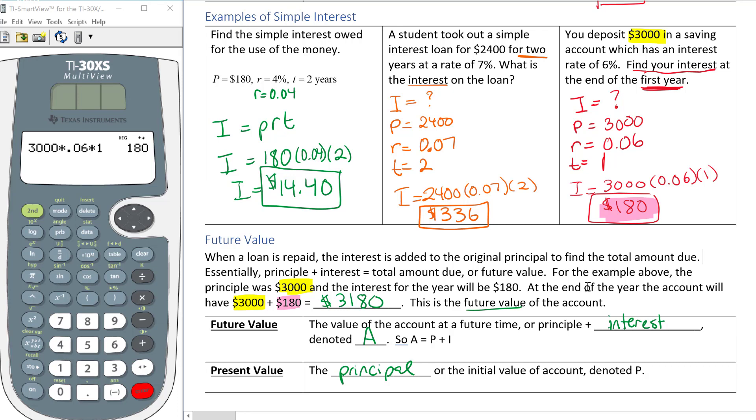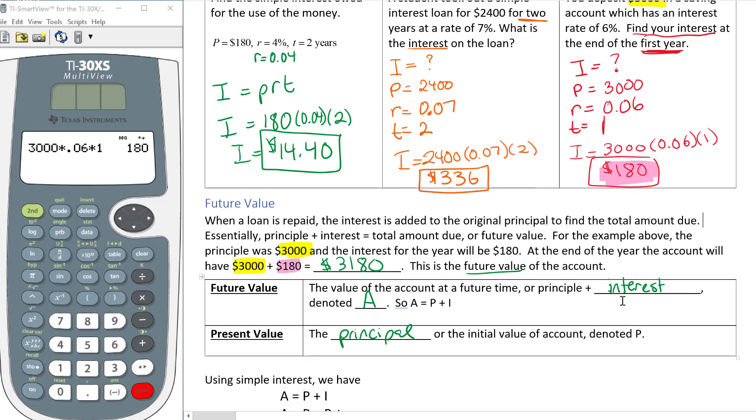It also makes sense because P is also used for principal for lowercase, which is basically the same thing.